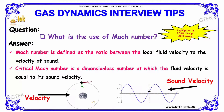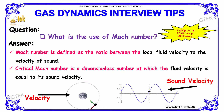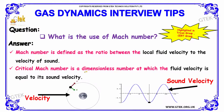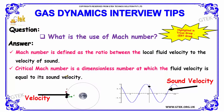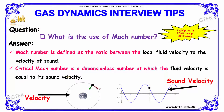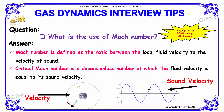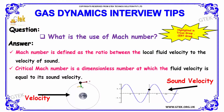The next question: what is the use of Mach number? Mach number is defined as the ratio between the local fluid velocity to the velocity of sound. In terms of the critical Mach number, this is considered to be a dimensionless number at which the fluid velocity is equal to its sound velocity.